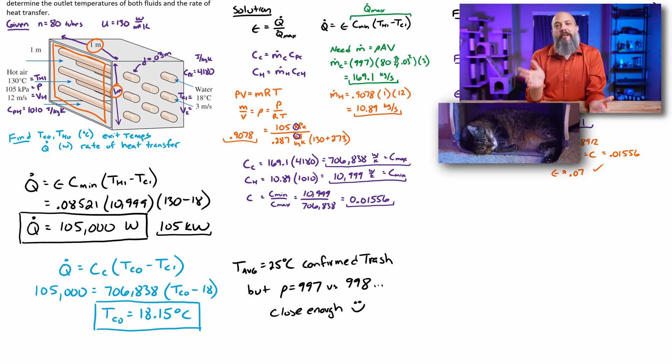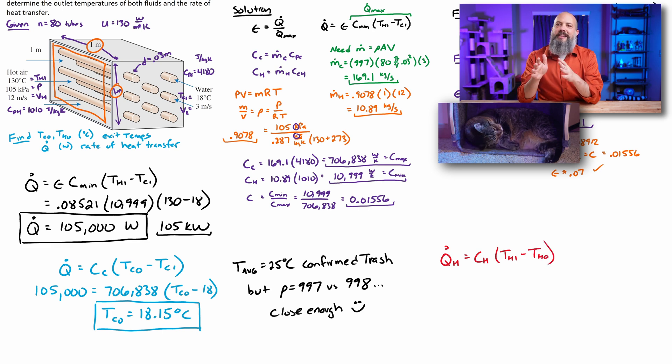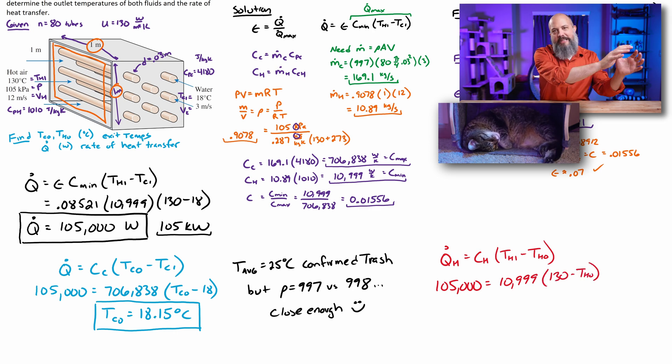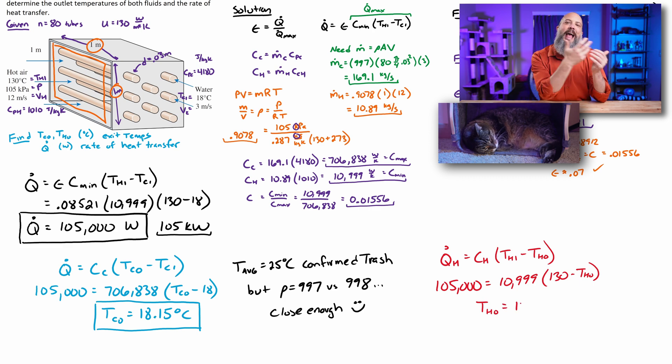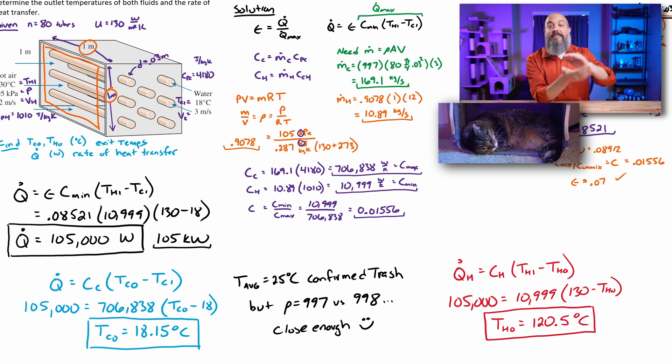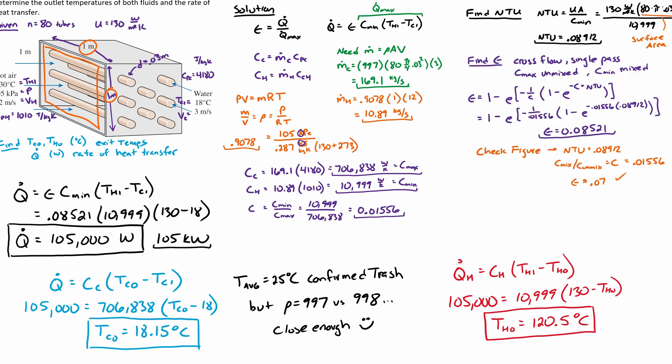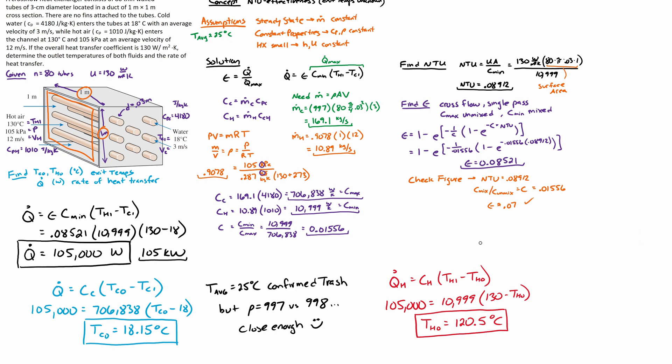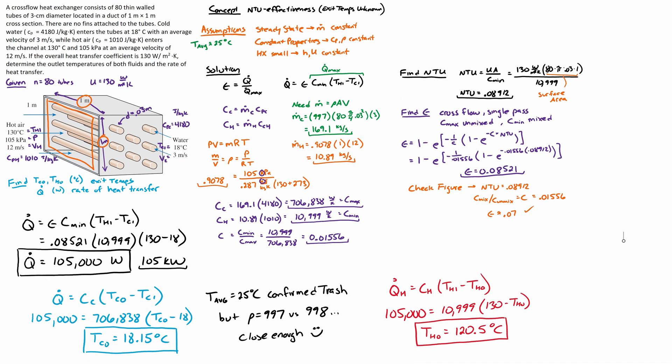To calculate the exit temperature for the air, same rate of heat transfer, 105,000 watts. We can use heat capacity rate for the air, the m dot cp for the air, the 10999, and then hot air inlet 130 minus hot air outlet, which is the value of t we're trying to find. We get an outlet temperature 120.5 degrees. And it makes sense that the exit temperature for the air was a much bigger change than the change for the water, because the heat capacity rate for water was humongous means it takes a huge amount of heat transfer to get a small change. Whereas the heat capacity rate for the air was much smaller. So for a given amount of heat transfer, you get a larger amount or it takes less heat to change temperature.